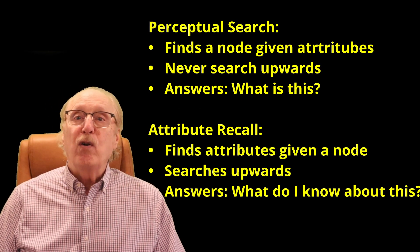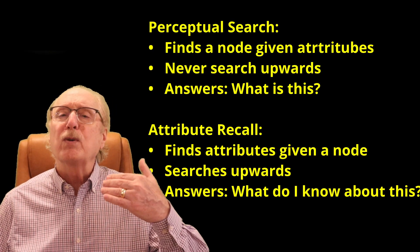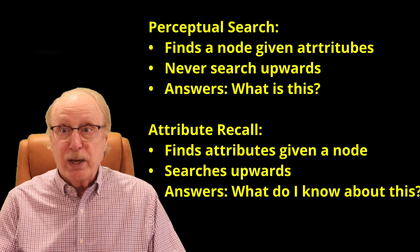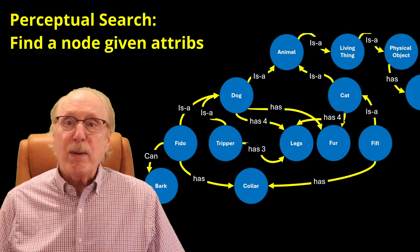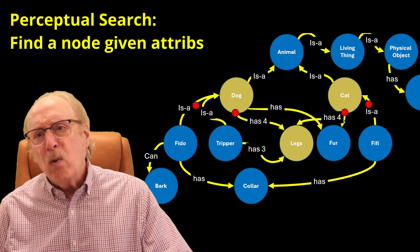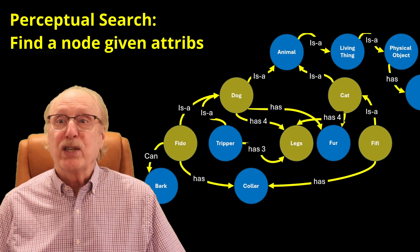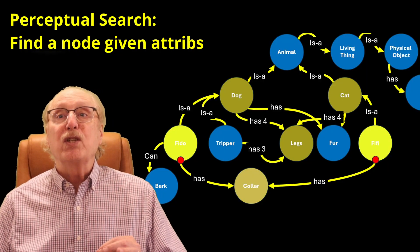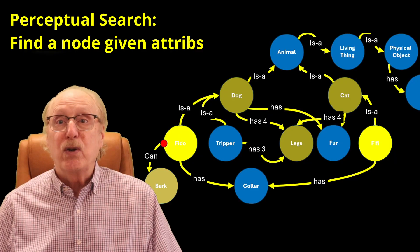In last week's video, I introduced two fundamental types of searches your brain performs continuously across its internal graph of knowledge: perceptual search and attribute recall. Perceptual search is what happens when you see several attributes in your visual field and you want to know, what is this? The attributes might be facts like what has a collar and four legs, or they might be fragments of an image. These features form the seeds for a search for the closest matching nodes within the graph.